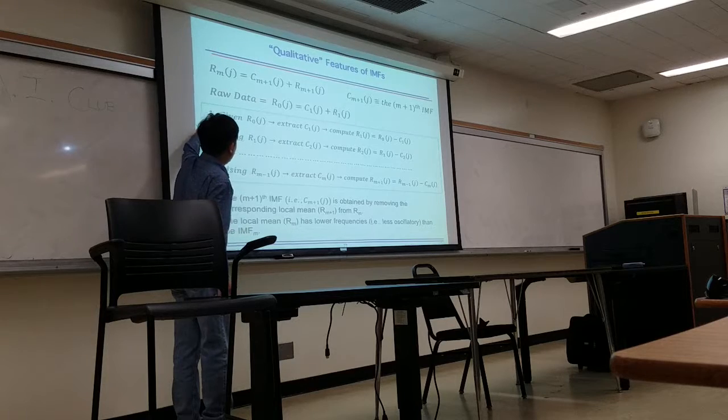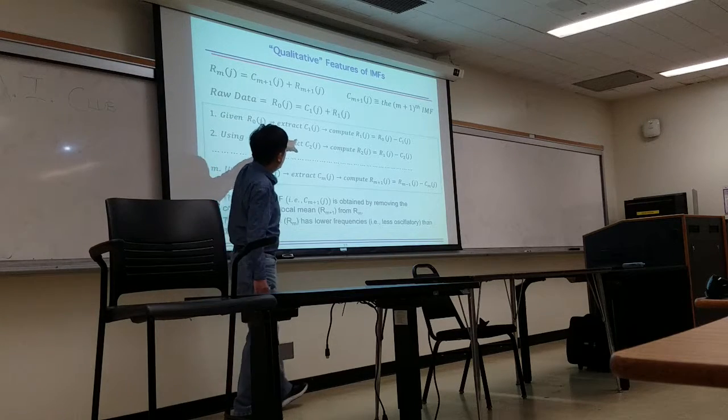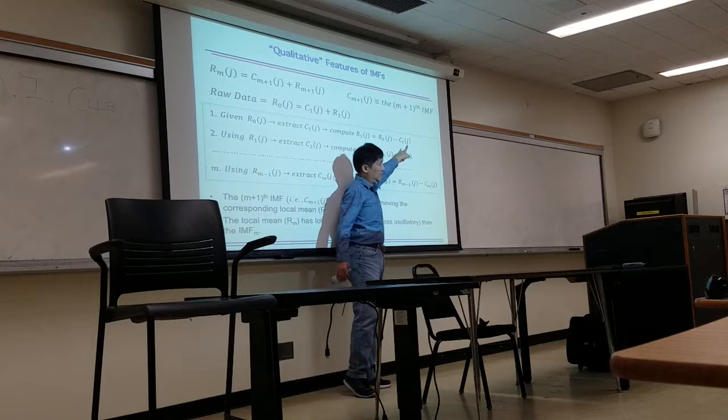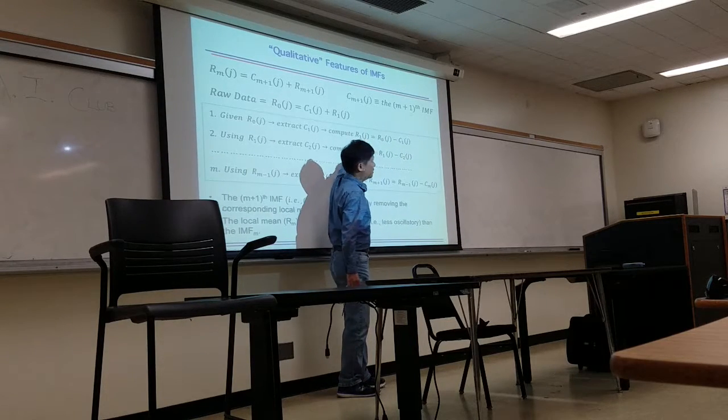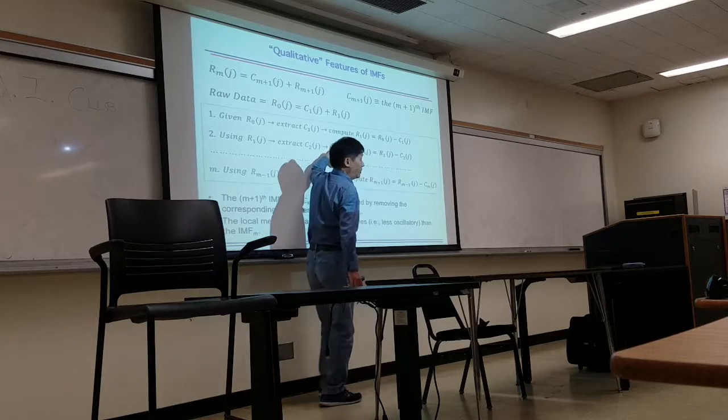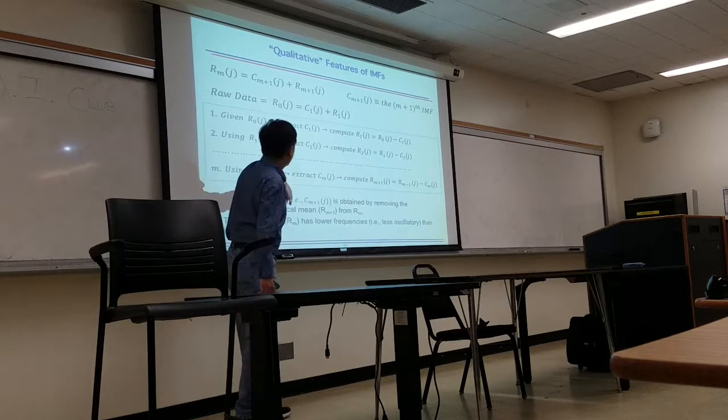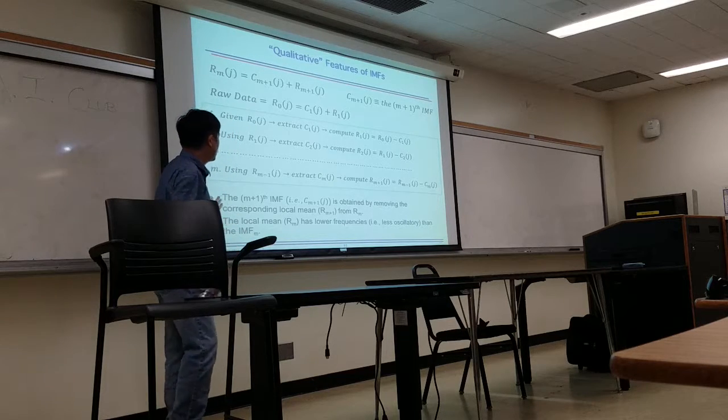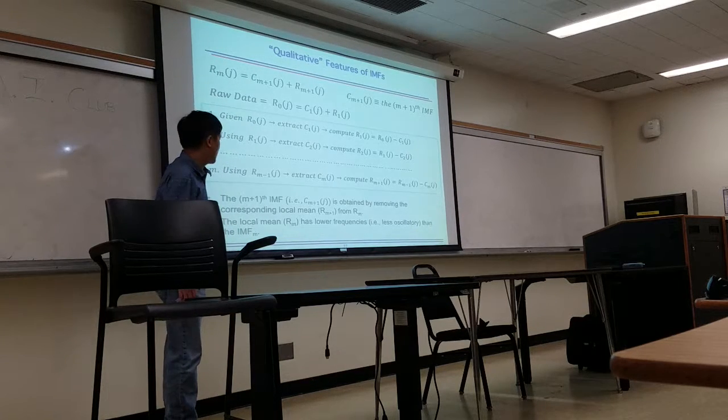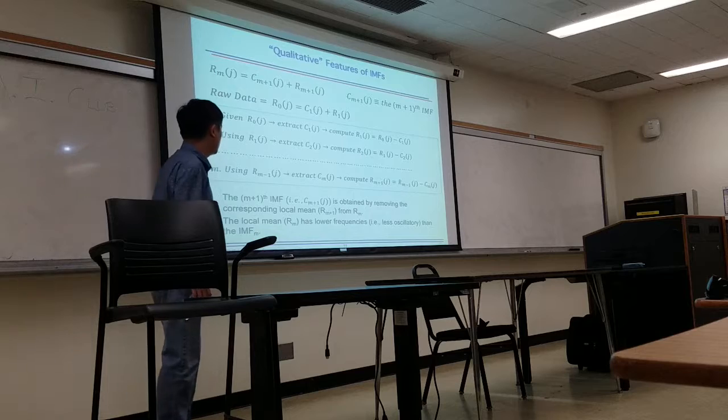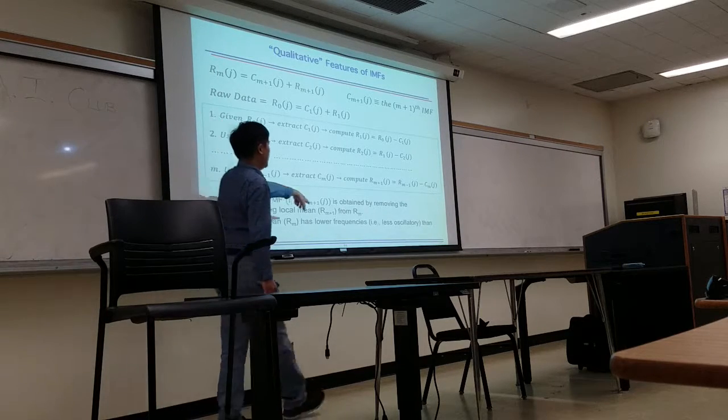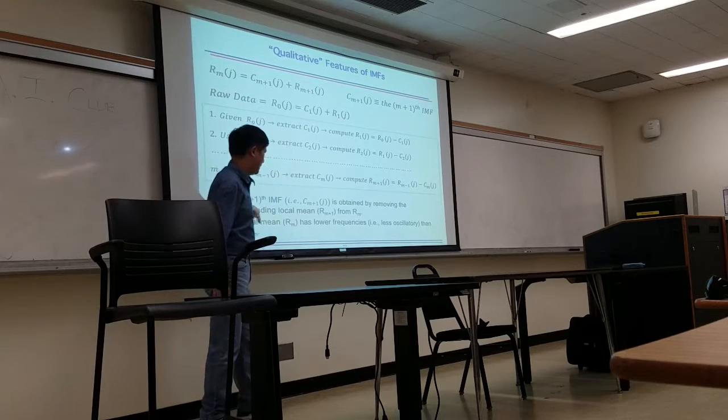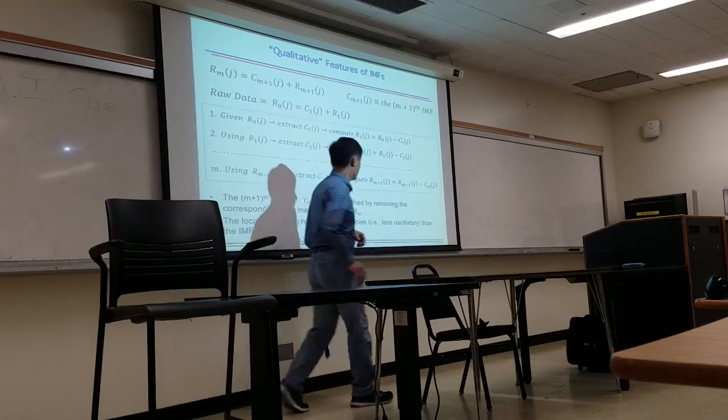So we can continue. Then how we do that? Once we extract the oscillatory one, we subtract this from the original data. We get the first residual, then we will repeat it. Then we can construct the N-th of the IMF. So these are the key features for IMF. The N plus one IMF is obtained by removing the corresponding local mean. And this local mean has a lower frequency.